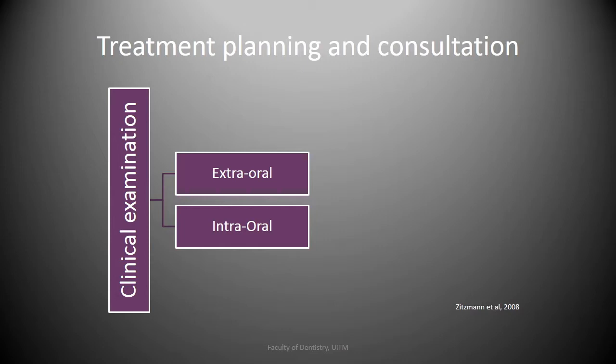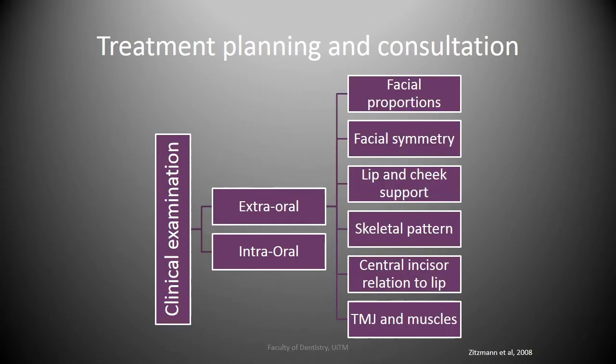It is also important to understand whether the patient prefers removable or fixed dental prostheses. After completing the history taking, clinical examination should be performed. The clinical examination comprises several extra- and intraoral parameters, and special attention should be paid to residual bone and soft tissue contours. The following extraoral parameters should be recorded: the first is facial proportions, done by dividing the face into three thirds — from the hairline to the eyebrow, to the subnasal point, and to the chin.